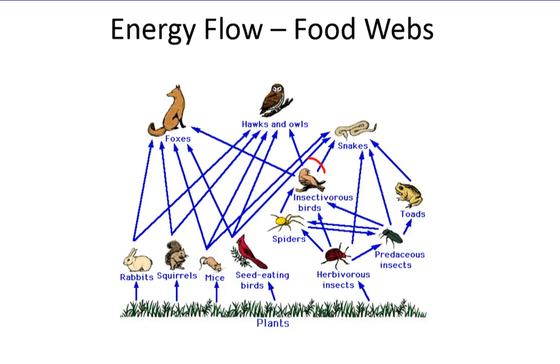For instance, we have insectivorous birds here that are eating insects. What happens if that insectivorous bird goes away? All of the things that it eats are now going to increase in population, which in turn might have an effect on the things they eat, might cause them to start to go away. Those ecosystems can start to collapse with just the disappearing of one single piece of that food web.